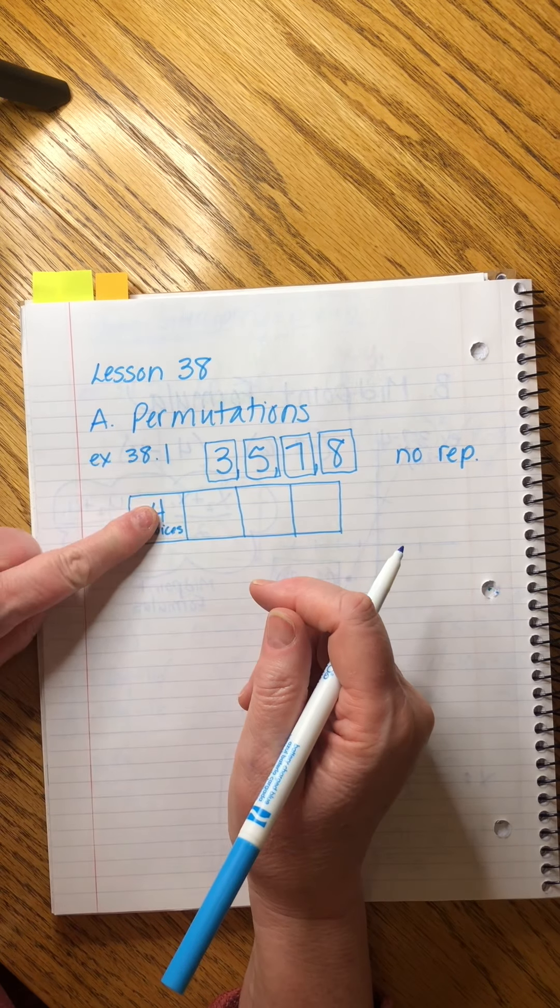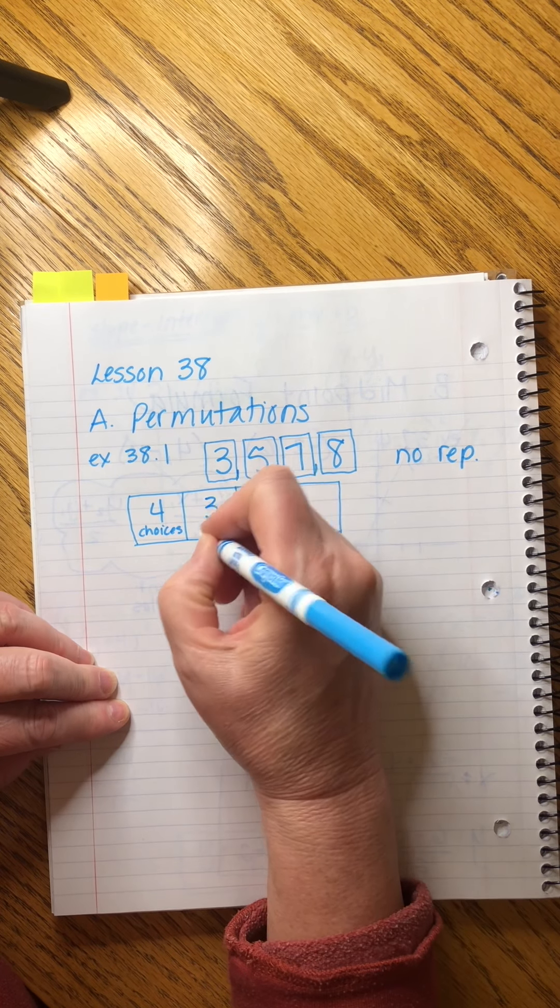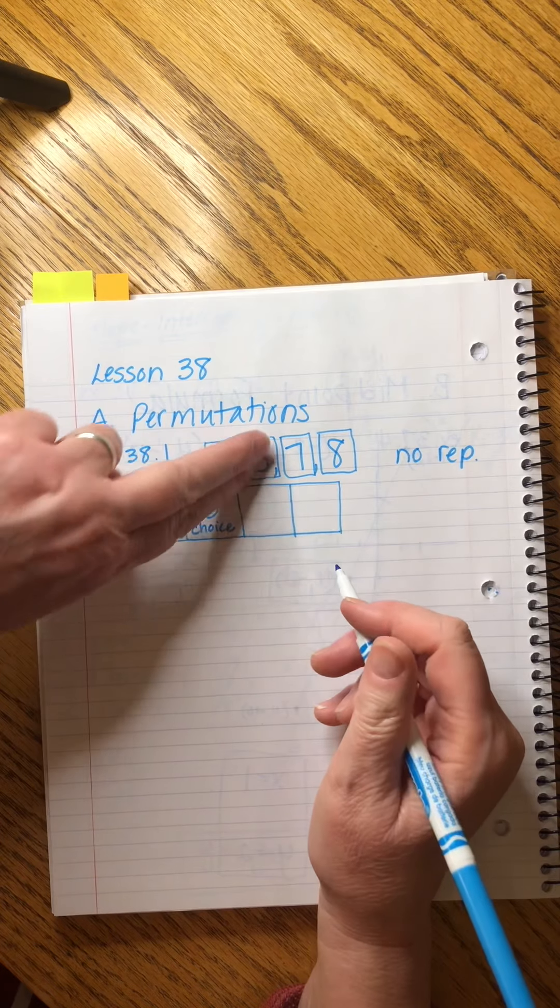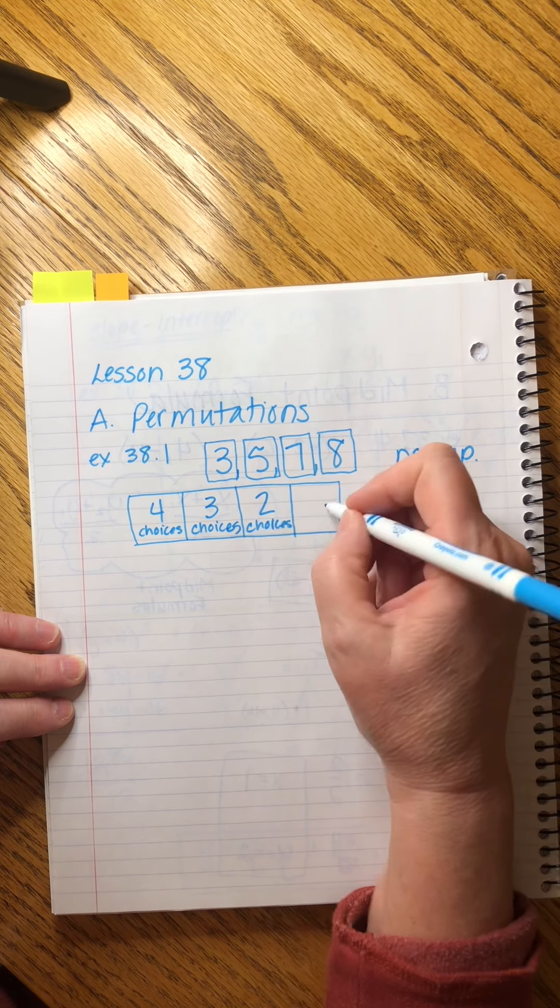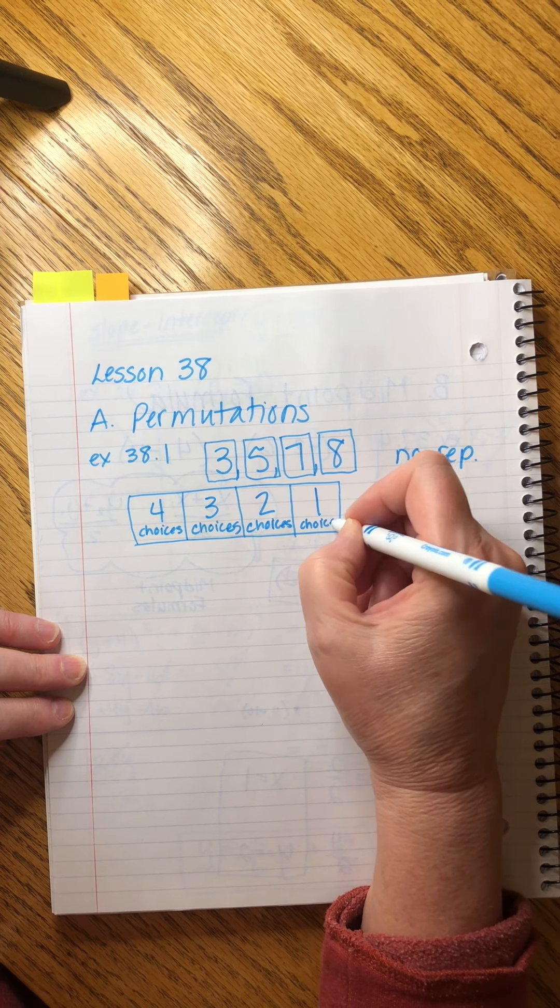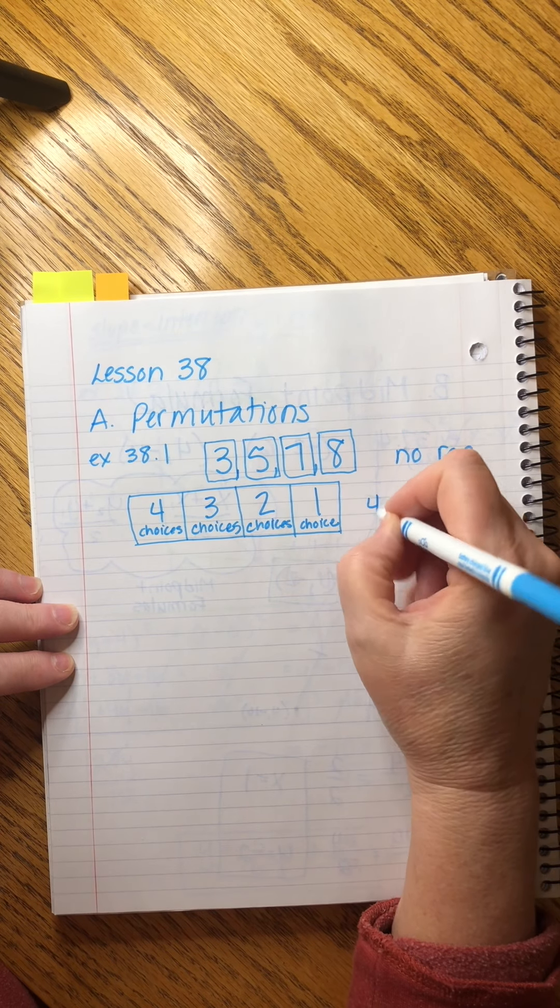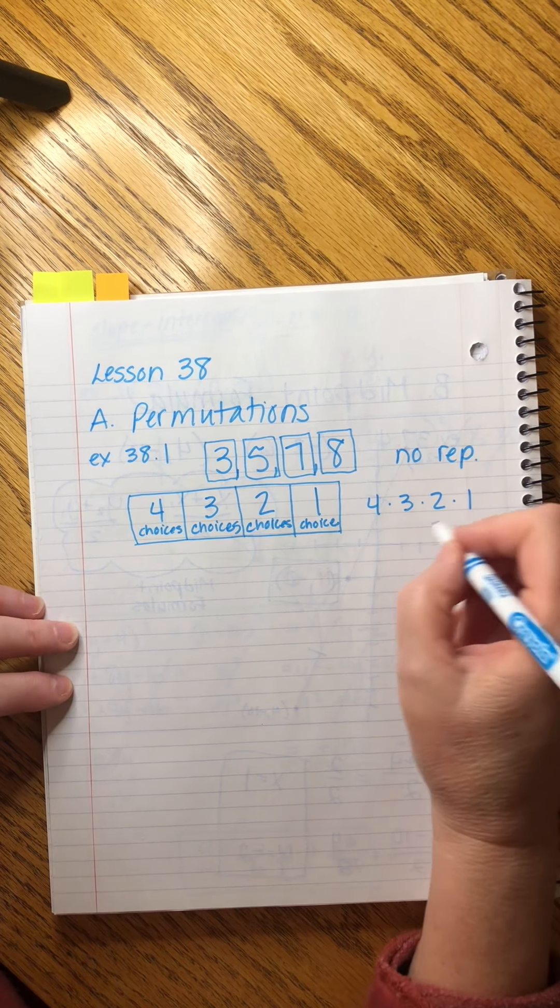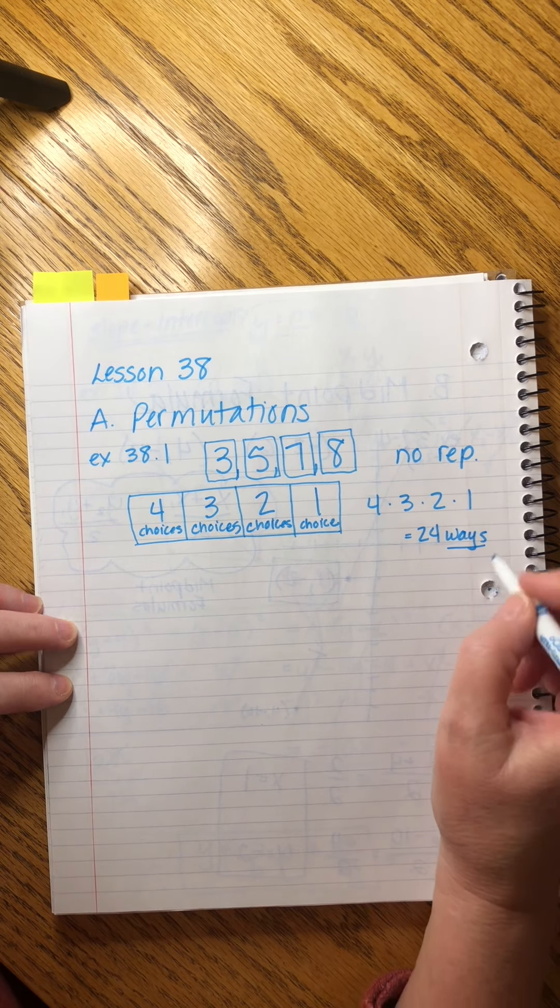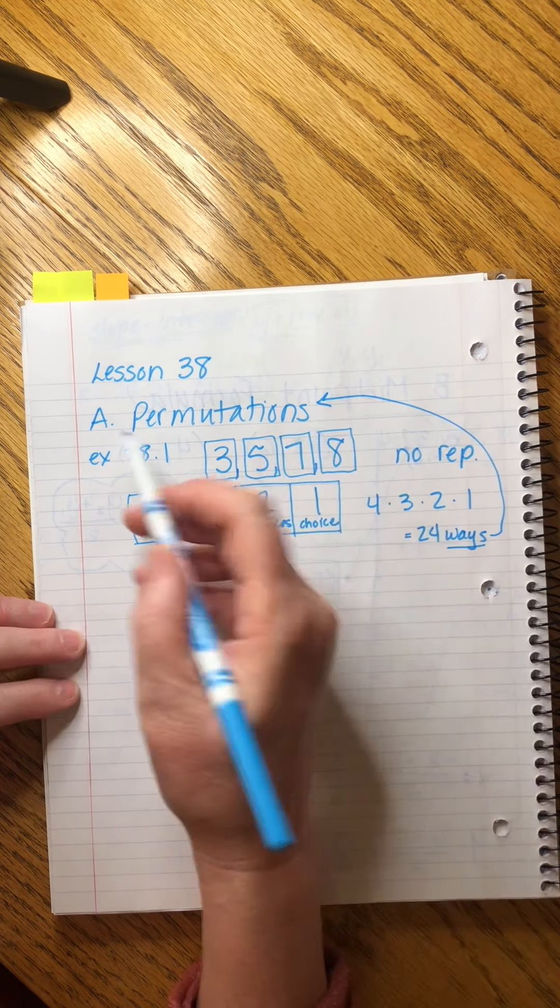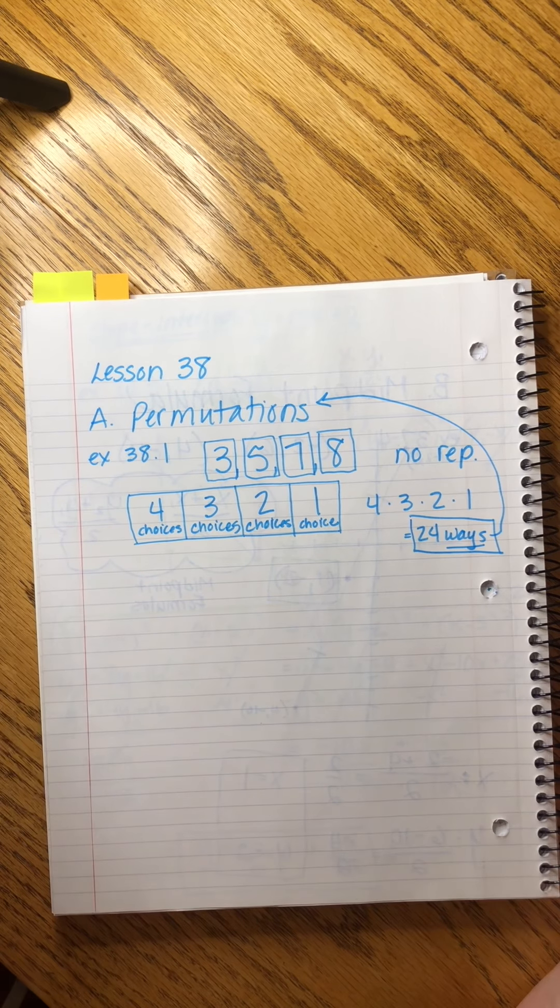Now we put one of these tiles in this box. So one of them is used up. How many choices do we have left for what to put in here? Well, we have three choices left. Now two of the tiles are used. So there's two more choices. And then when we get down to the last one, there's only one choice, right? How do we know how many different ways there are to arrange these tiles in all? We multiply. Four times three times two times one. And that equals 24 ways these tiles could be arranged. And ways is a word that means permutation. A permutation is a unique way that they could be arranged. Okay? So that's the basic idea.